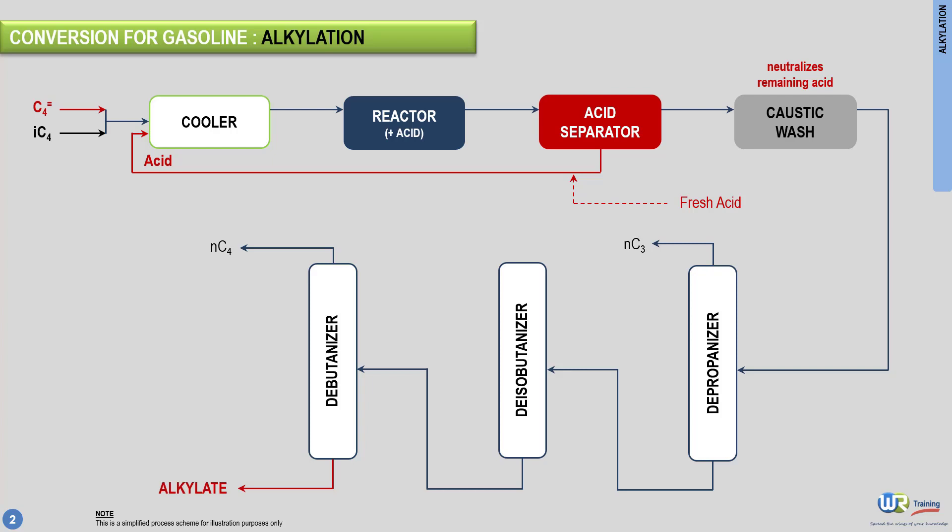The deisobutanizer, which is the second distillation column downstream of the reactor, is very essential to the process. It separates the isobutane that did not react and recycles it back to the feed.